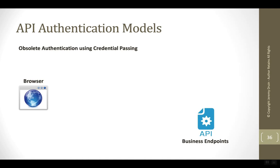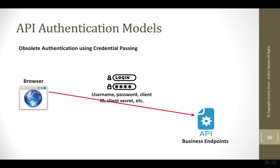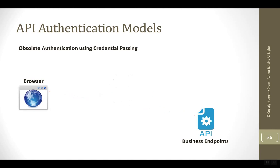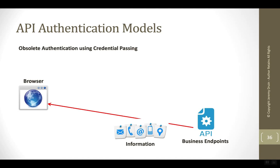It starts off with the browser and a business endpoint, and the business endpoint or API has the information that we need. The browser sends over the credentials — essentially a username and a password, but it could be called other names like a client ID, a client secret, or some other term with API mixed in. But the bottom line is it's an identifier and a credential, a username and a password, and these are passed with every single request. Then in response, the API responds back with the information.